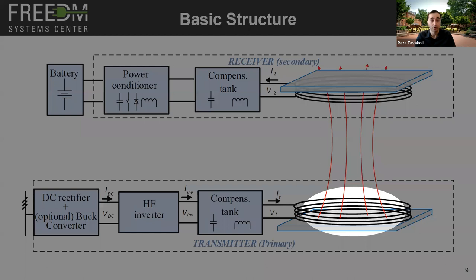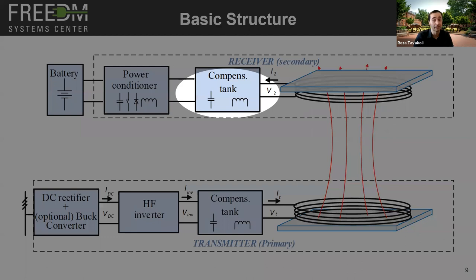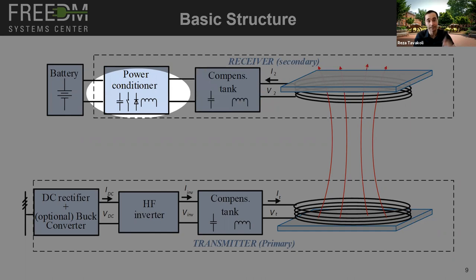The transmitter coil is made of Litz wire, which reduces proximity and skin effects. We can use ferrites to increase mutual inductance and aluminum to reduce leakage fields outside the transmitter pad. These components are located at the roadside. Across the air gap, the secondary side on the vehicle has a receiver pad with similar Litz wire, ferrite, and aluminum construction, followed by a compensation tank and a power conditioner unit to control the battery charging rate, ultimately reaching the EV battery.